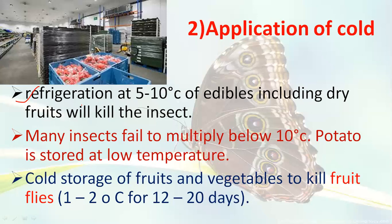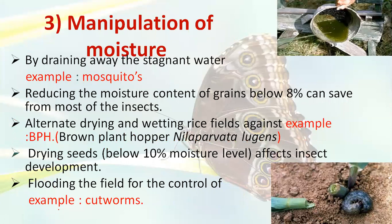The third cold practice is cold storage of fruits and vegetables to kill different maggots, eggs, or fruit fly insects. In the case of mango and other fruit crops attacked by fruit flies, if the commodity is stored at one to two degrees Celsius for around 20 days before exporting, the fruit fly will never attack those crops.